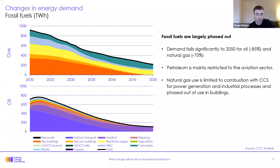Almost all oil use is phased out by 2050 except for the purple chunk, which is aviation. So oil use, particularly petroleum, is restricted to aviation in the long term, and gas is used only for CCS in power generation and in fuel supply — particularly for production of hydrogen — and not used in buildings in the long term.